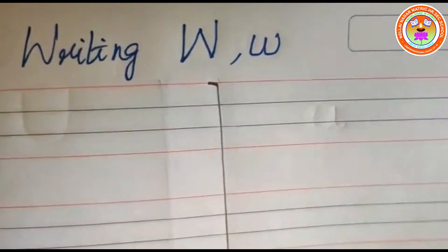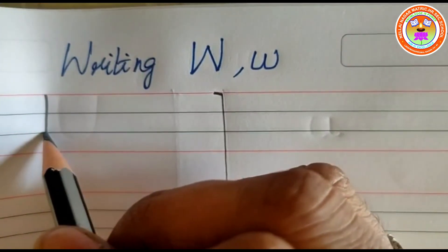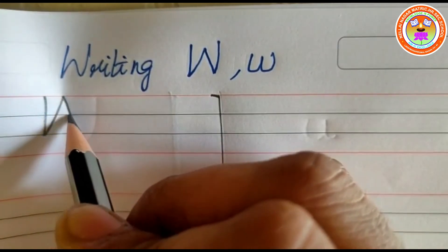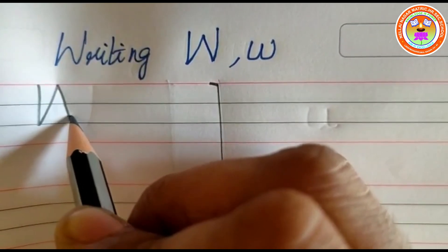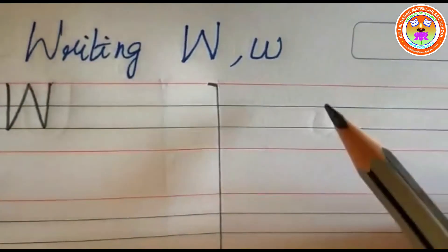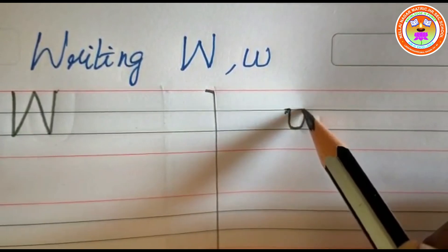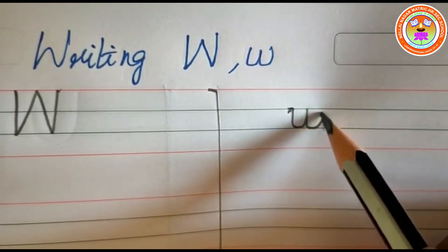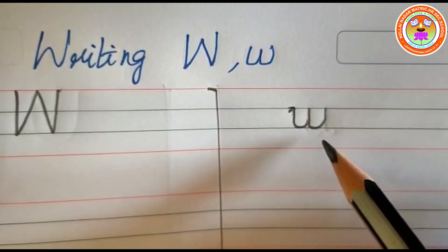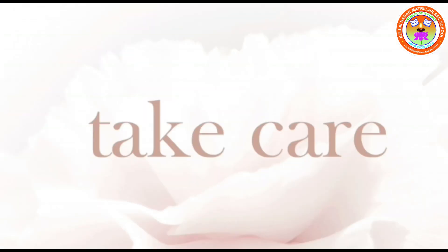This is capital letter W and this is small letter W. For writing capital letter W, touch on the first red line and put one standing line down to the second blue line. From here put one slanting line going up to the first red line, then another slanting line coming down to the second blue line, then a standing line going up to the first red line. This is capital letter W. For writing small letter W, write in the two blue lines — touch on the first blue line and put one upward curve, again on the same line come down and put another upward curve, touching the second blue line. This is small letter W. Like this you also write in all the lines and complete the note. That's all for today's class, thank you, take care, bye.